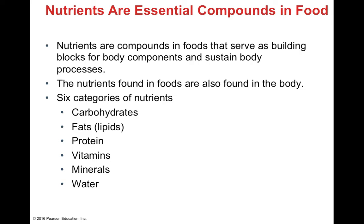So what are nutrients? Nutrients are biomolecules — compounds found in your food that are the small building blocks, or monomers, for body compartments and are used to sustain your body processes. The six categories of nutrients are: carbohydrates (which include simple sugars), fats or lipids, proteins (comprised of amino acids), vitamins (small biomolecules that often help in biomolecular pathways), minerals (single elements), and water (H₂O).